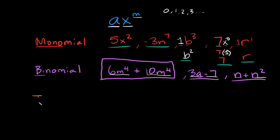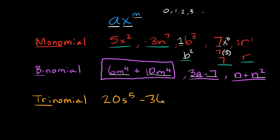Now we also have something called — you probably guessed it — a trinomial. A trinomial is a combination of three terms. You can see the root word 'tri' — think of a tricycle, which has three wheels. For example, something like 20s to the fifth minus 36s plus 1 — this would also be called a polynomial, but more specifically it's called a trinomial, because it has exactly three terms: 20s to the fifth, negative 36s, and positive 1.